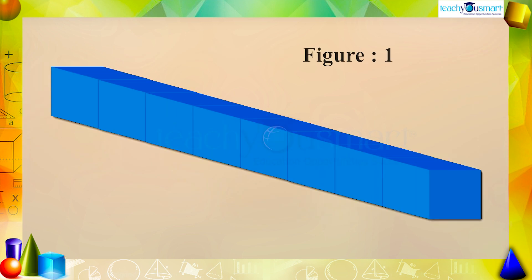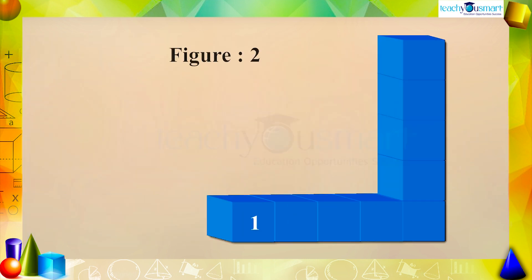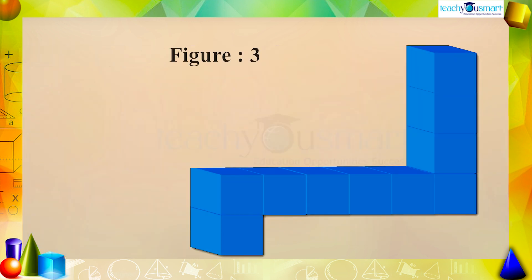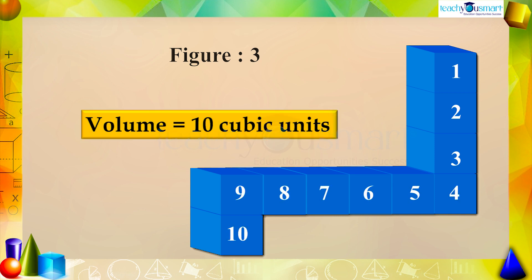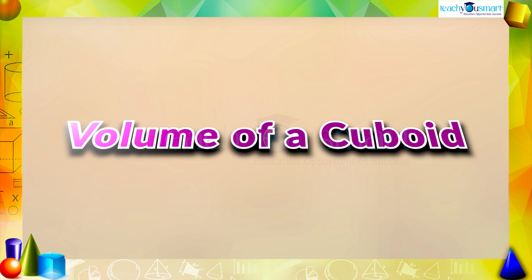Let's see some solids. In figure one, the number of unit cubes is eight, so the volume is eight cubic units. Figure two contains nine unit cubes, that is the volume is nine cubic units. In figure three, the number of unit cubes is ten and the volume is ten cubic units.